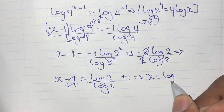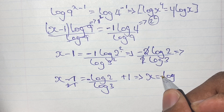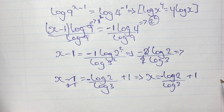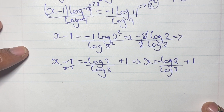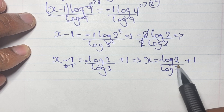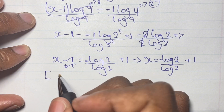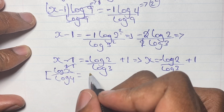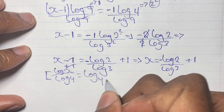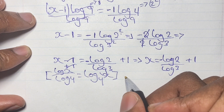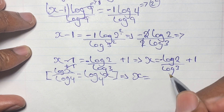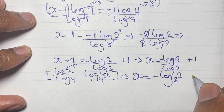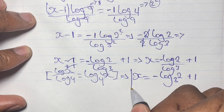So x equals negative log 2 over log 3 plus 1. Now this can be considered a final solution, but we can simplify it further using the logarithm rule where log x over log y equals log base y of x. Applying this rule, x equals negative log base 3 of 2 plus 1. And this is the final solution of x.